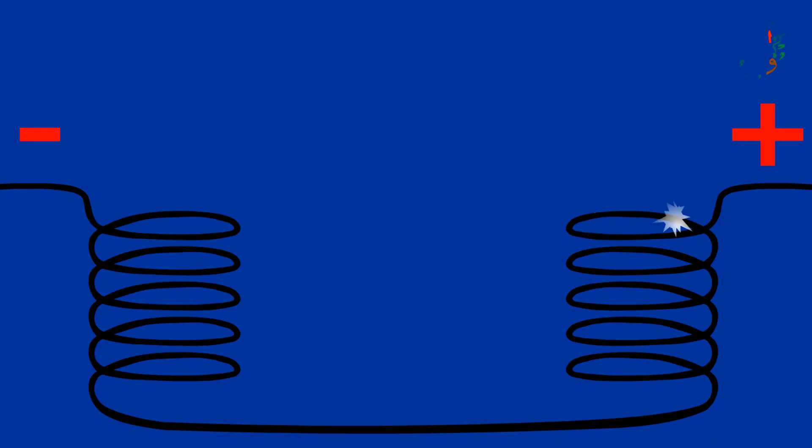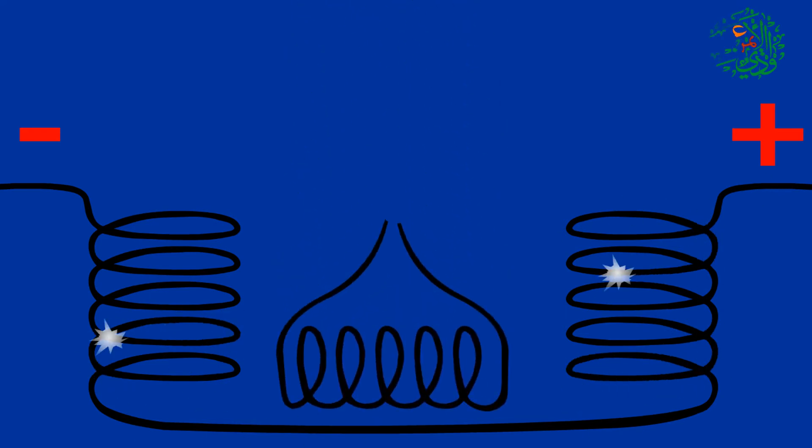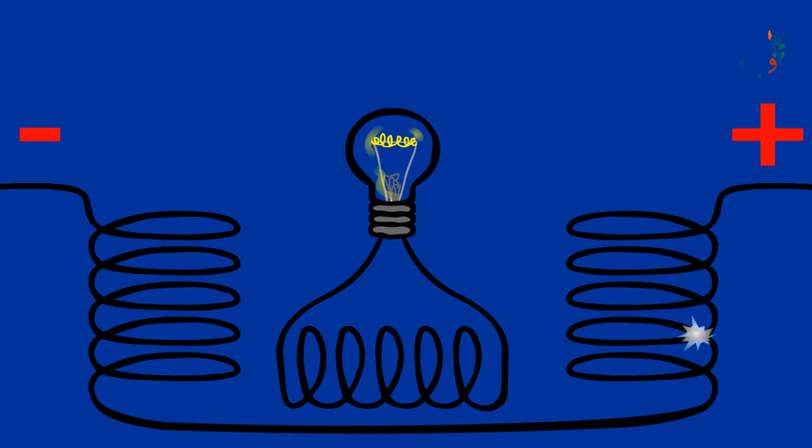To have a better understanding of the process, you have to imagine two coils. If electricity flows in the first coil, the electricity will be induced in the second coil that is placed in the electromagnetic field of the first coil.